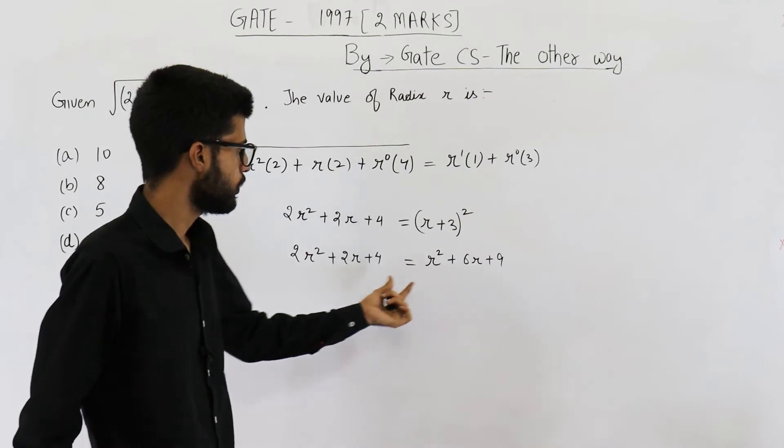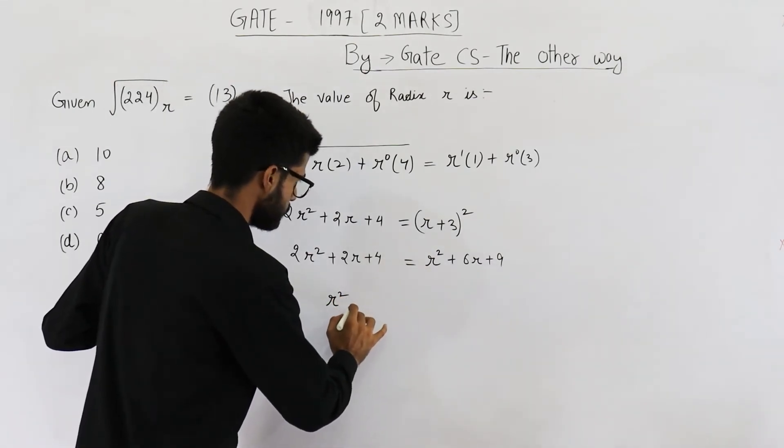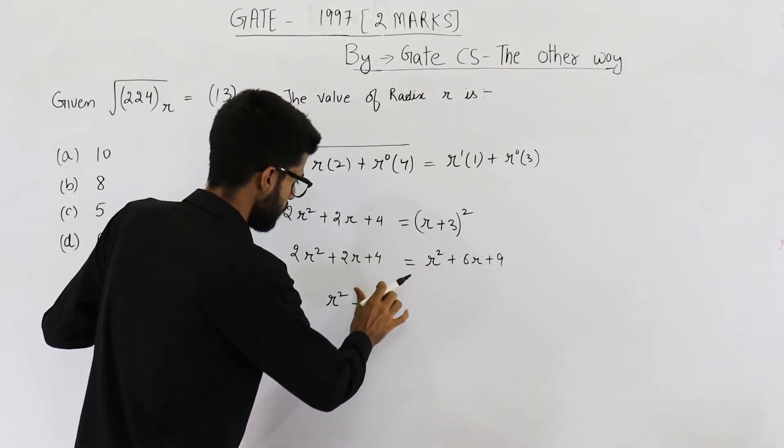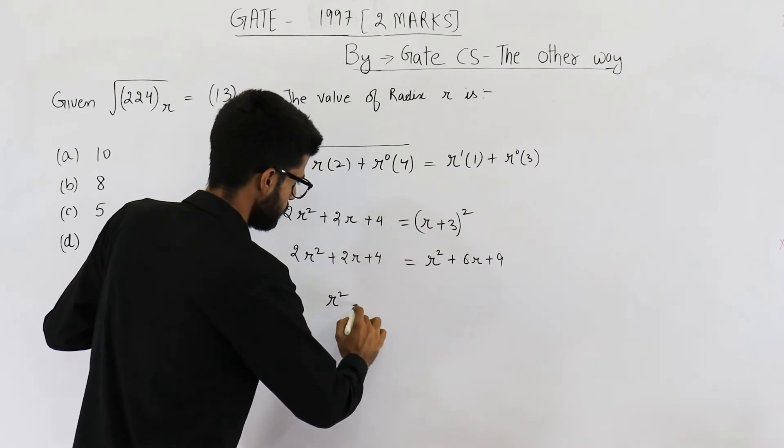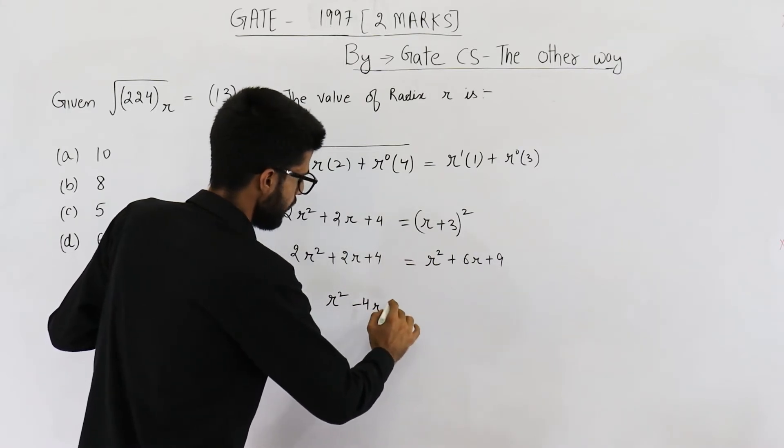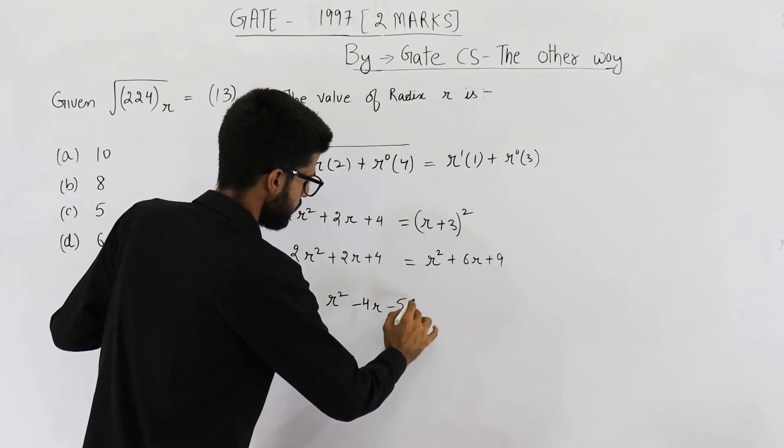2r square minus r square will be r square minus 4r, and 4 minus 9 is minus 5.